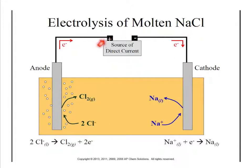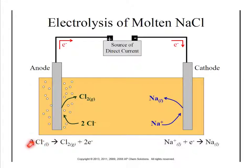They hook it up to a power source — think of this power source as a pump that's going to pump electrons from one side to the other. The anode is going to take electrons from something and pump them through to the cathode. In this case, it takes them from the Cl⁻. The negative charge means there are extra electrons, so it takes those electrons and generates Cl₂ gas — that's what those little bubbles are.